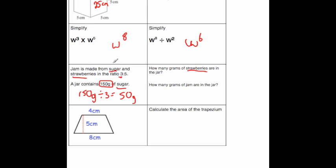Now when we want to find how many grams of strawberries there are, strawberries is the 5 in the ratio. So we're going to do 50 grams for one part times 5, because there's 5 parts of strawberries. And that's going to give us 250 grams. And finally, to see how many grams of jam there are altogether, we know there's 150 grams of sugar and 250 grams of strawberry. If we add them together, 150 plus 250, that's equal to 400 grams. So there's 400 grams in the jar.